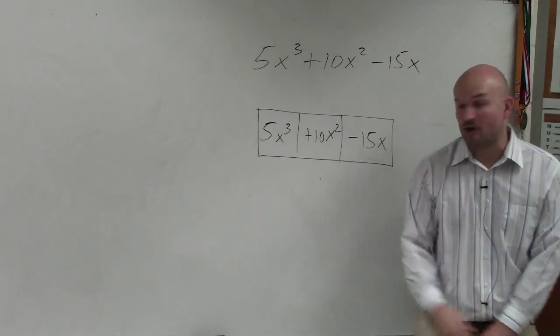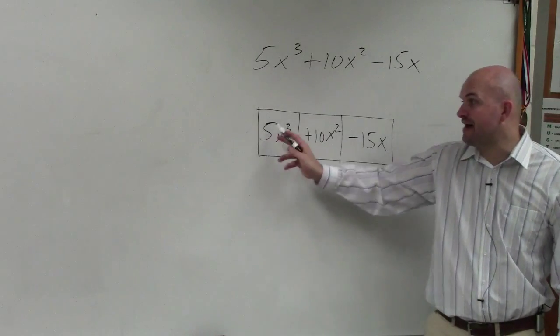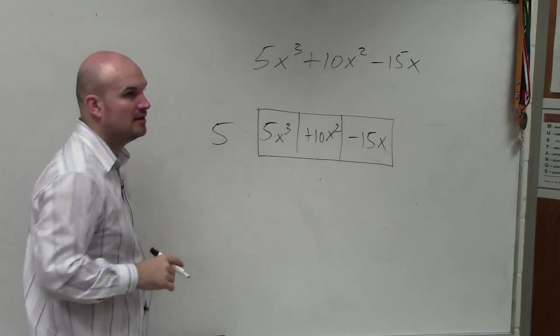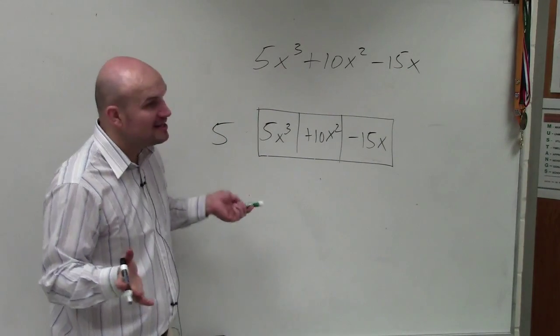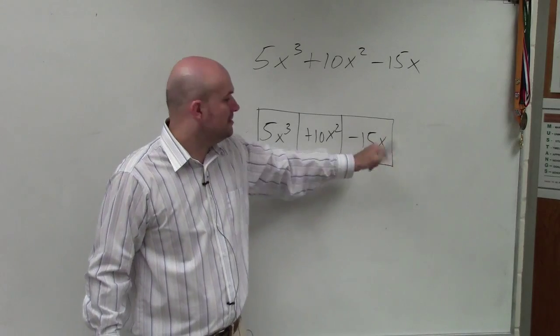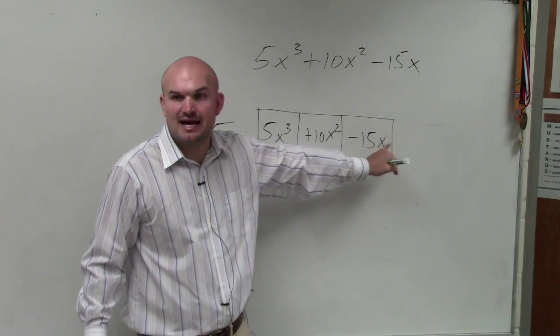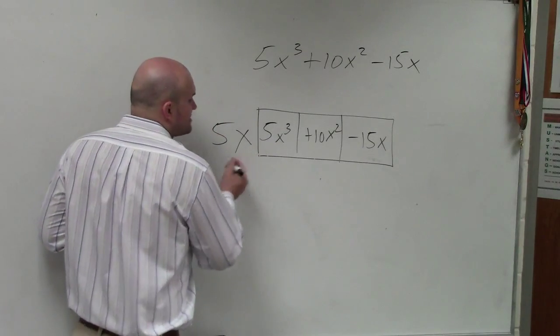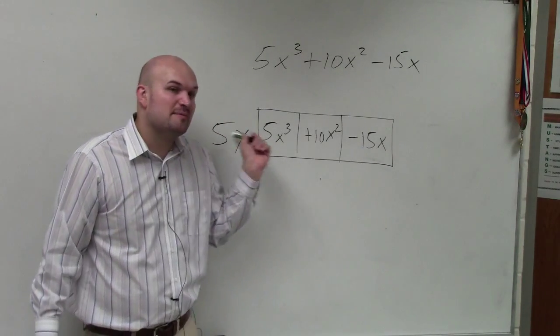You could use five, right? Because we know we can multiply five into five, five into 10, and five into negative 15. And then what else could I use? I could use an x. I can't go any higher than x because that's my lowest x. It only has x to the first power as the lowest one. So I do 5x. So that is my greatest common factor.